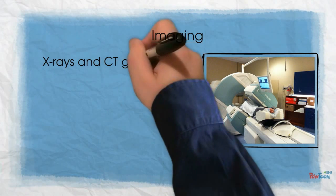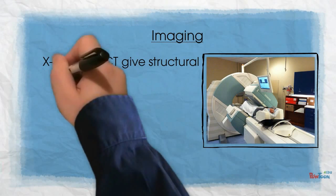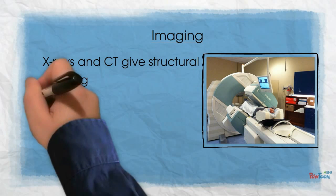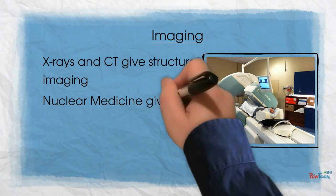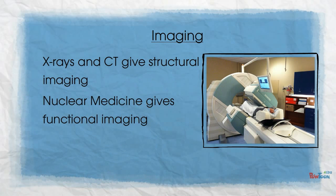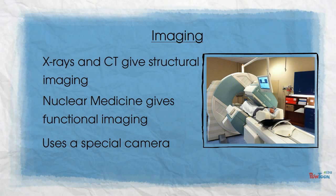Scans such as X-rays and CT are able to provide great information about the structure of the body, but nuclear medicine provides us information on the function of the body. The tracer that is administered inside the body is able to be seen using a special camera, which allows us to see where the tracer is in the body.